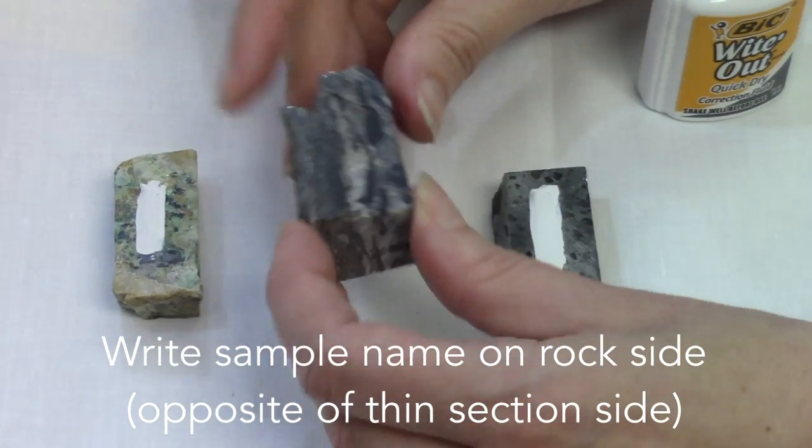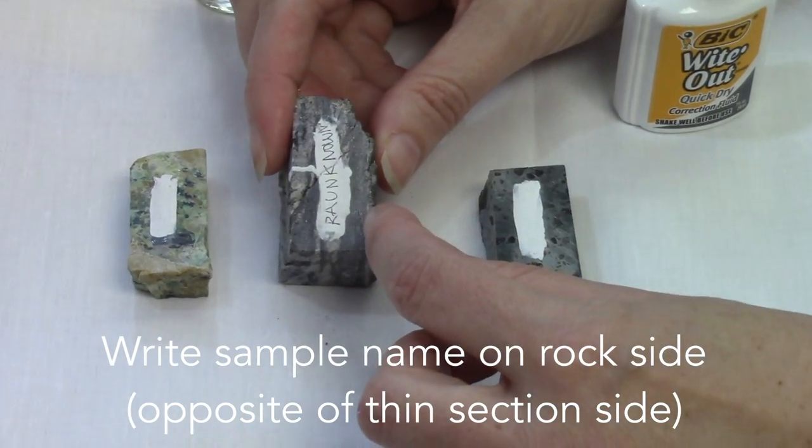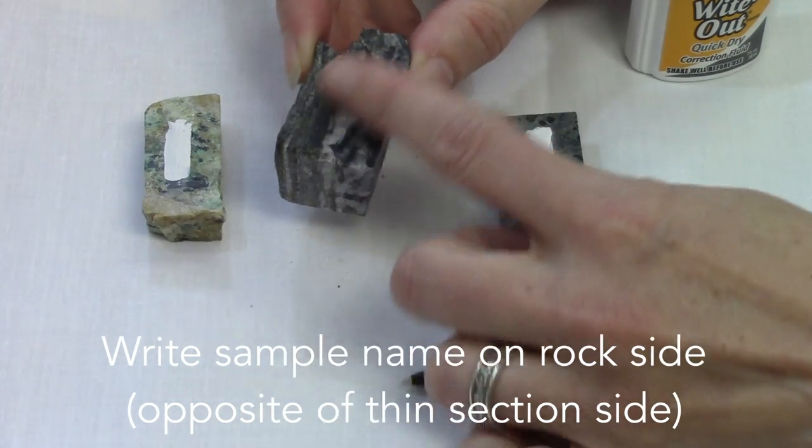It's always useful to label the thin sections on the side opposite to where you want to make the thin section.